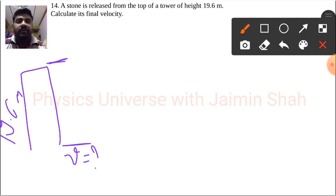So final velocity that we have to find. Initially we are released it. The word that is used, released, means initial velocity is 0.